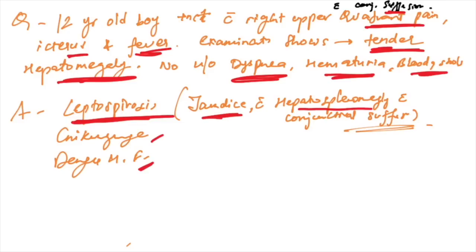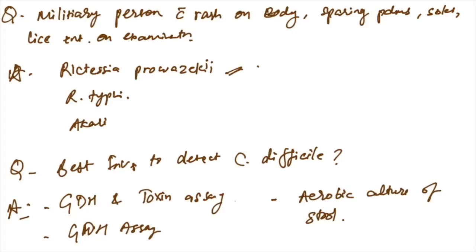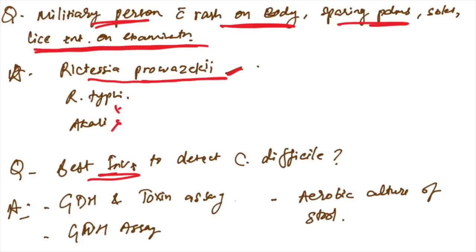Military person with rash on body sparing palms and soles, lice present on examination. Organism is Rickettsia prowazekii, not typhi, not akari. Best investigation to detect Clostridium difficile: options were GDH and toxin assay, GDH assay alone, and aerobic culture of stool. GDH and toxin assay is done to best detect Clostridium difficile.